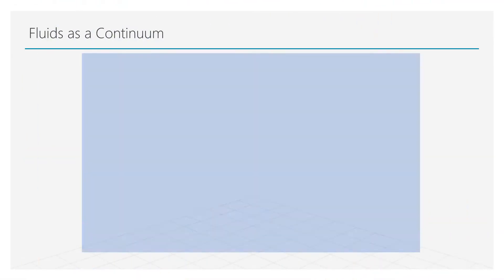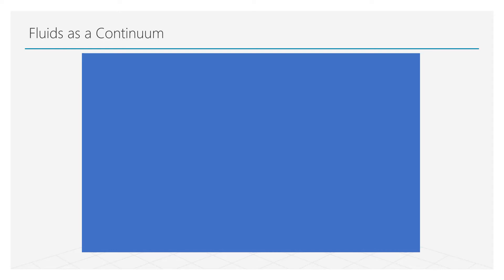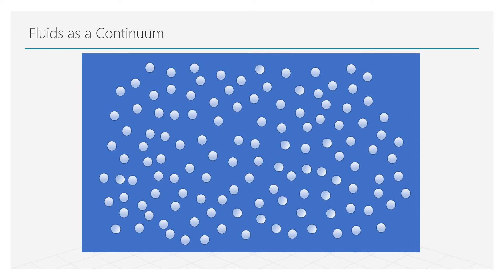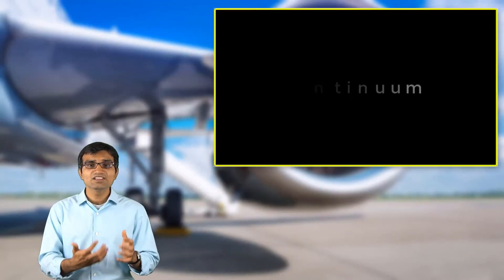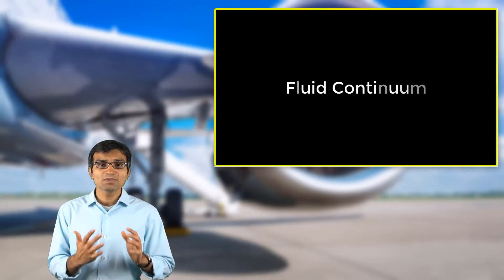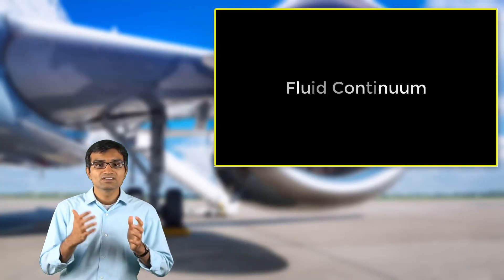These properties at a point represent an average over a small volume. The dimension of this small volume is large compared to the distance between individual fluid molecules, but is small enough to be represented by a point in space.